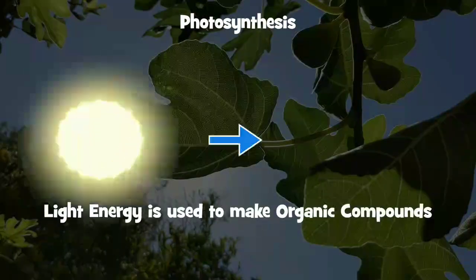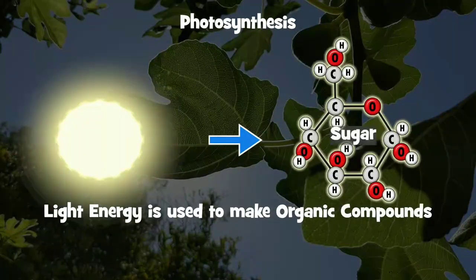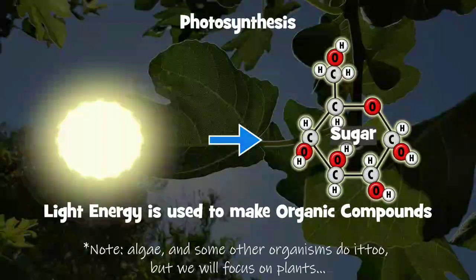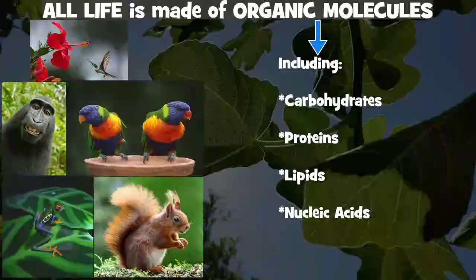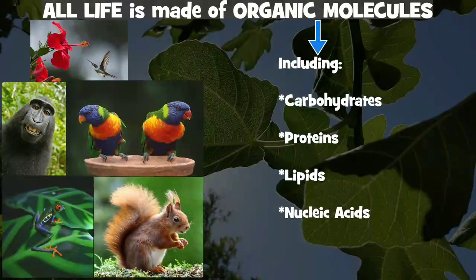In photosynthesis, light is used to make organic compounds, especially sugars, in plants. This is extremely important for virtually all life on Earth, because these organic compounds are what we, and our food, are all made of.